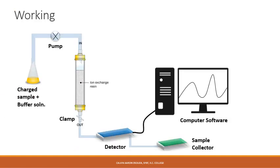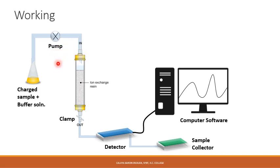The working of ion exchange chromatography is pretty straightforward now that we have learned the basic principle. This is the schematic diagram for the ion exchange chromatography. You have a conical flask or container which consists of the charged sample and the buffer solution. This sample is allowed to pass through a tube which goes through a pump, and this pump allows the sample to pass through the column at a certain constant flow rate. The flow rate is usually maintained depending on how fast or slow we want the separation to take place.